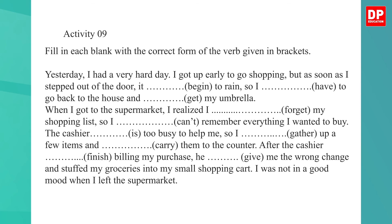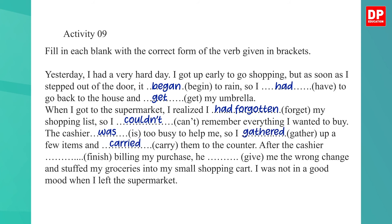'I got up early to go shopping, but as soon as I stepped out of the door it began to rain, so I had to go back to the house and get my umbrella. When I got to the supermarket, I realized I had forgotten my shopping list, so I couldn't remember everything I wanted to buy. The cashier was too busy to help me, so I gathered up a few items and carried them to the counter. After the cashier finished billing my purchase, he gave me the wrong change and stuffed my groceries in my small shopping cart. I was not in a good mood when I left the supermarket.'